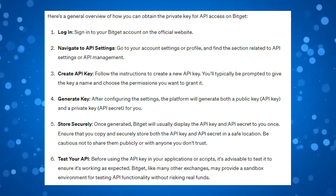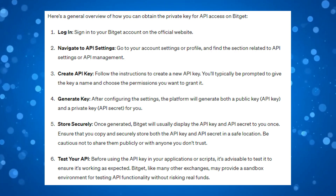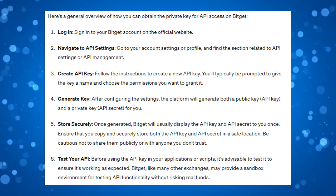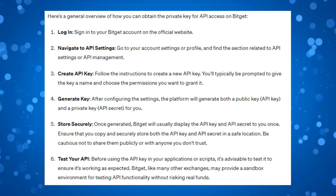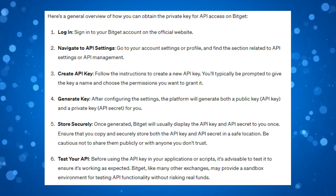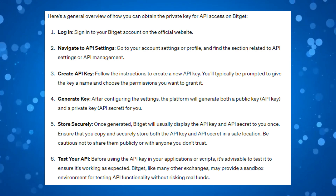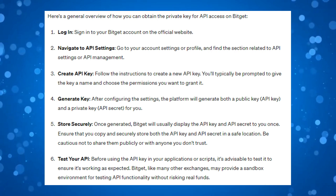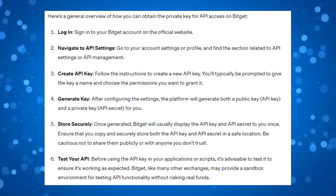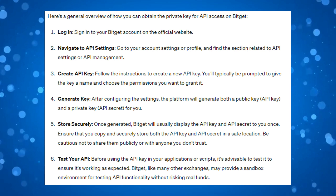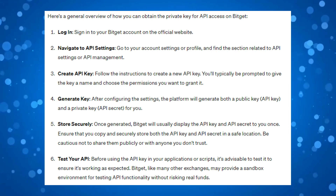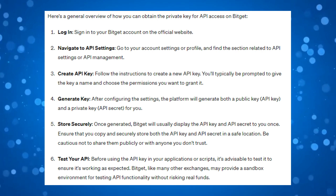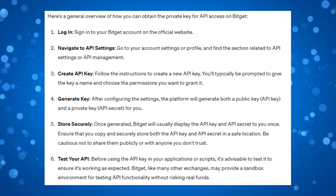Here is a quick guide on how you can obtain the private key for API access on BitGet. The first thing you're going to want to do once you've signed into your BitGet account is go into your API settings. Go to your account settings or profile and you should see a section related to API settings or API management. From here you should see an option to create an API key. Follow the instructions to create your API key — you will typically be prompted to give the key a name and choose the permissions you want to grant it.